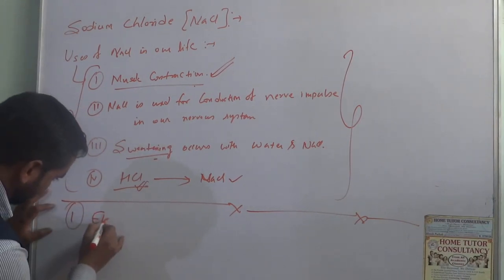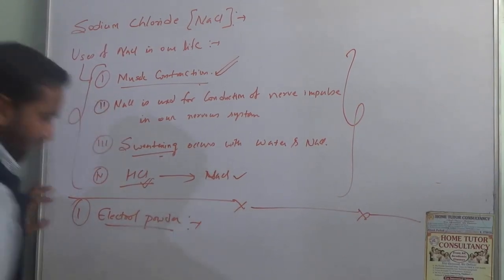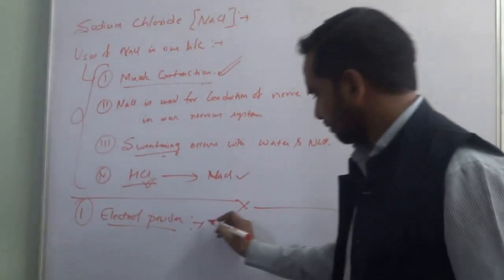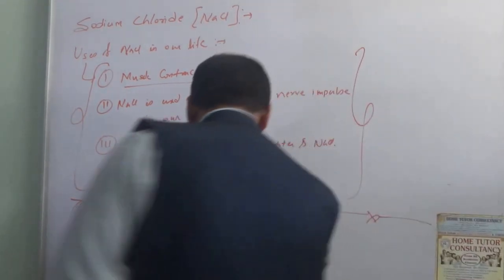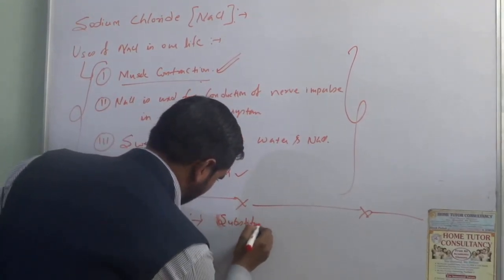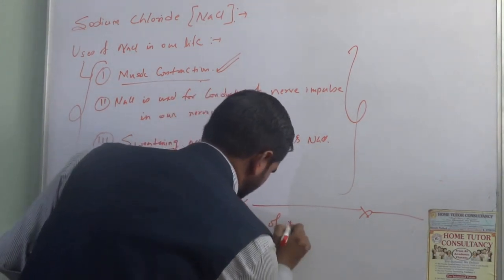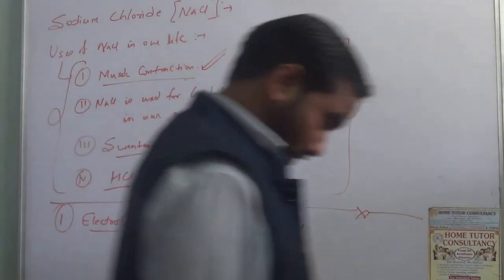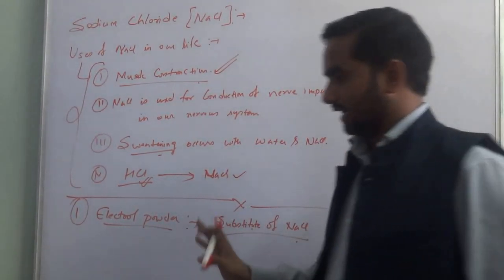One more method to take NaCl artificially is Electrol Powder, which is a substitute of NaCl and gives direct energy in the form of NaCl.